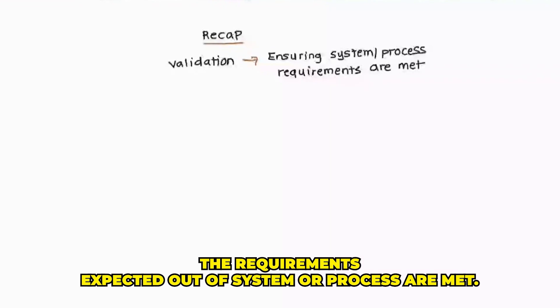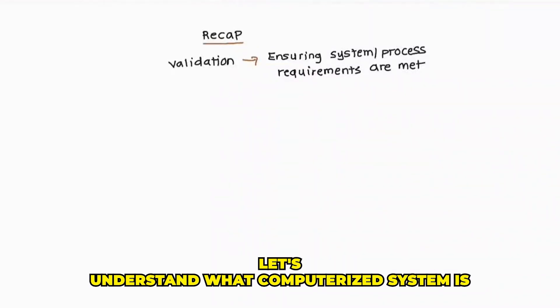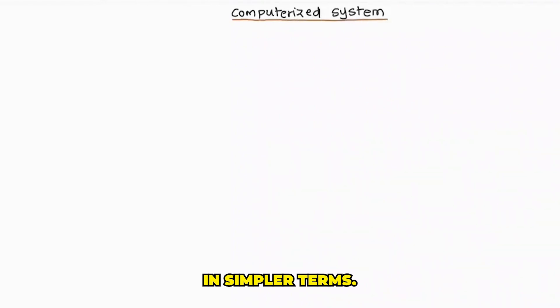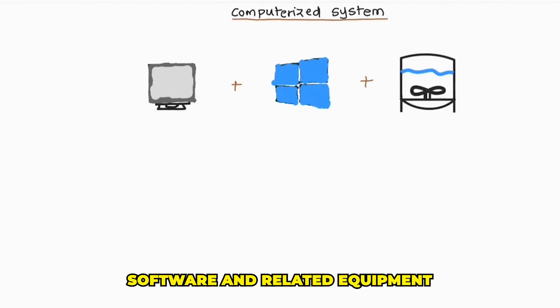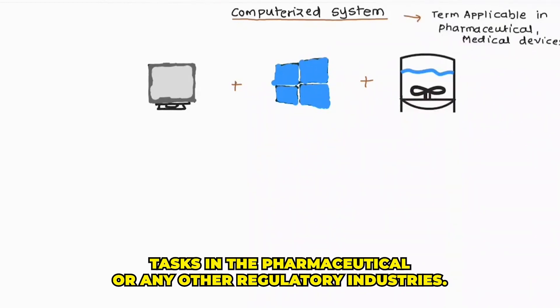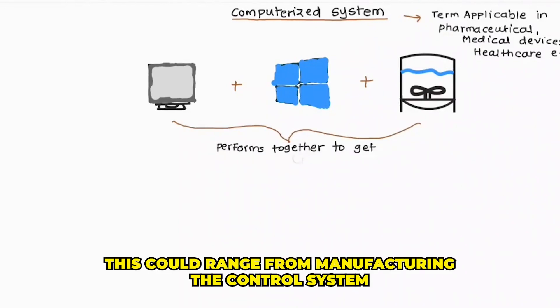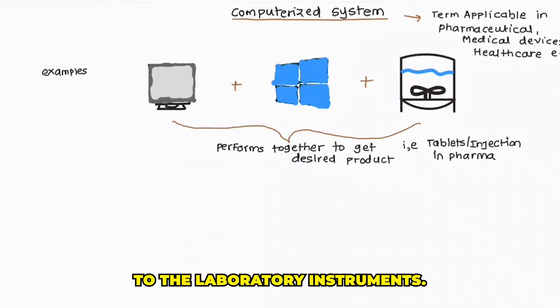Let's understand what computerized system is. In simpler terms, computerized system is a combination of computer hardware, software, and related equipment that work together to perform specific tasks in the pharmaceuticals or any other regulated industries. This could range from manufacturing control systems to laboratory instruments.